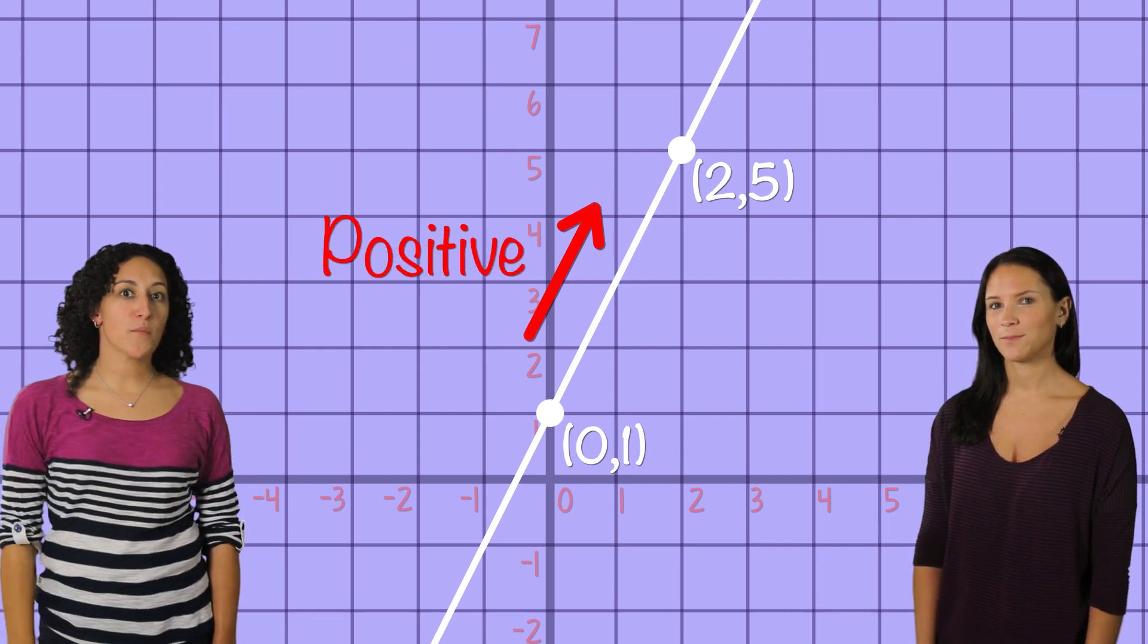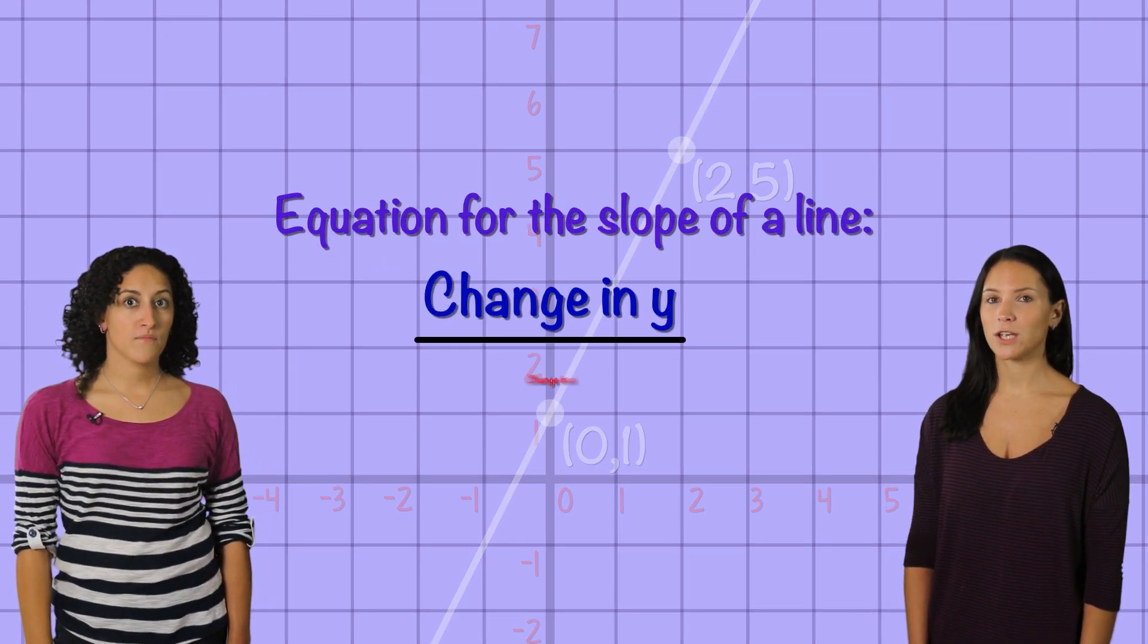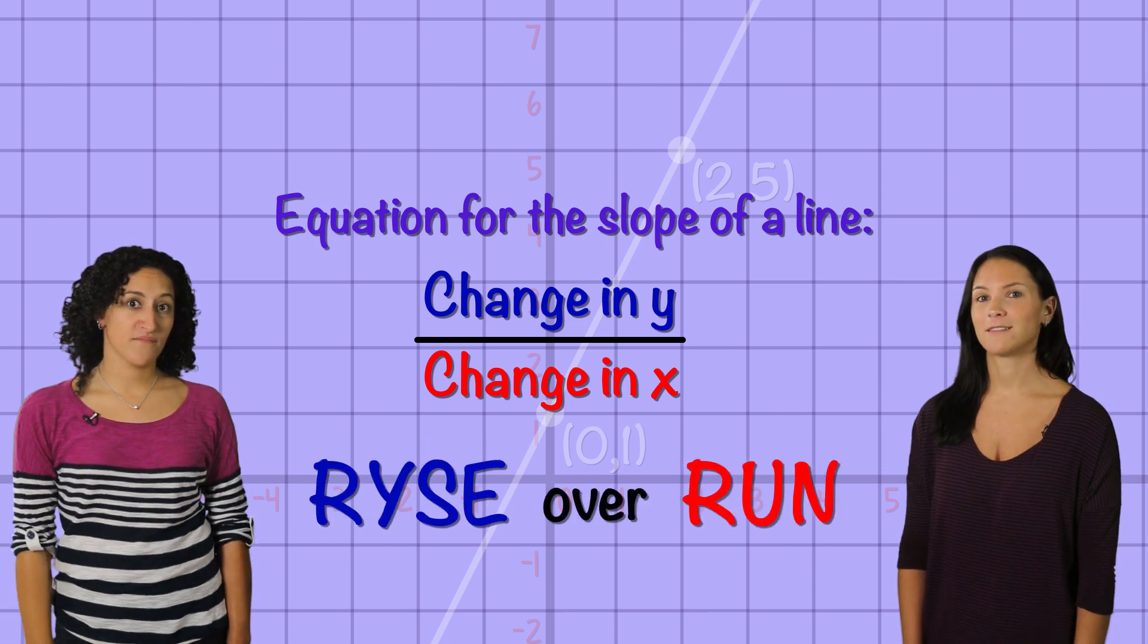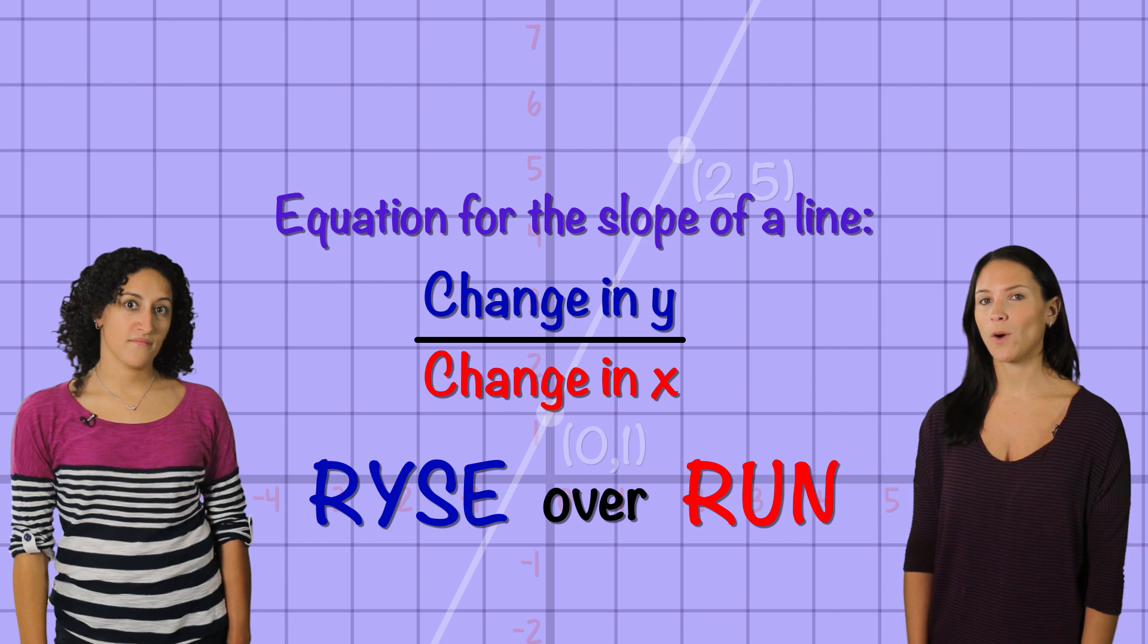Good thinking, but before we begin, let's remember the equation for the slope of a line. Change in y over change in x, or rise over run. We know, we know, that's not how you spell rise, but it's helpful to remember that y is on top.